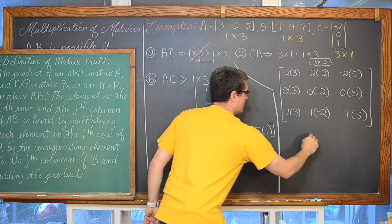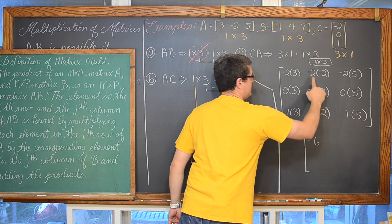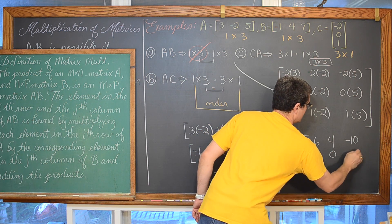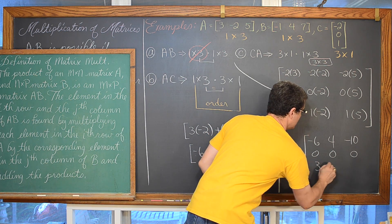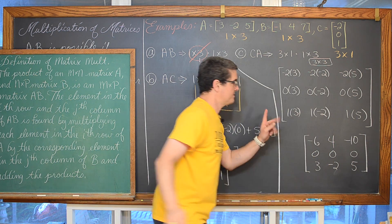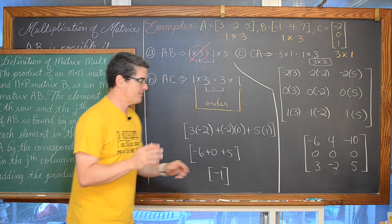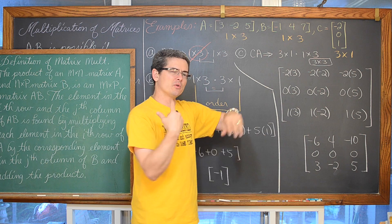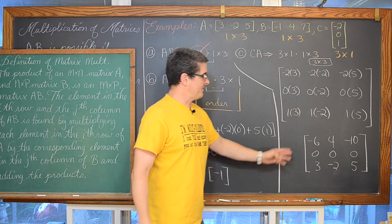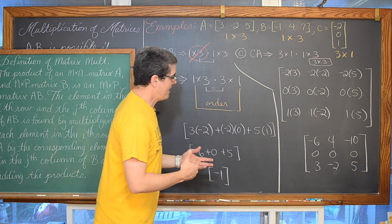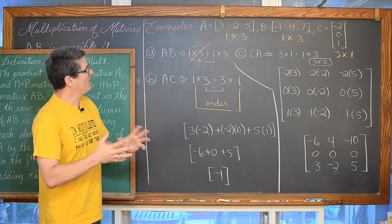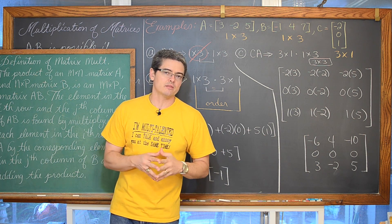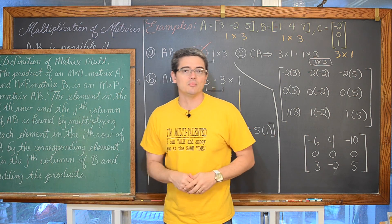A times C came out to be a 1 by 1 matrix of negative 1, but just turning the order of that multiplication around, C times A is not even the same size matrix — we ended up with a 3 by 3 matrix. This is a nice example showing that multiplication is not commutative with matrices.